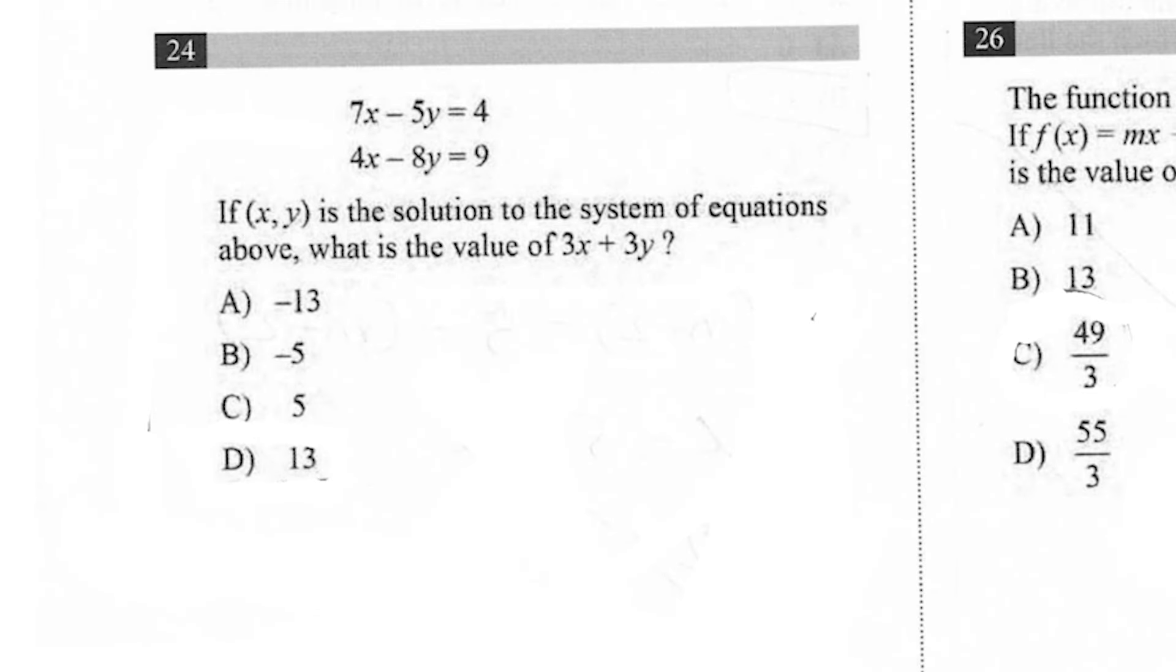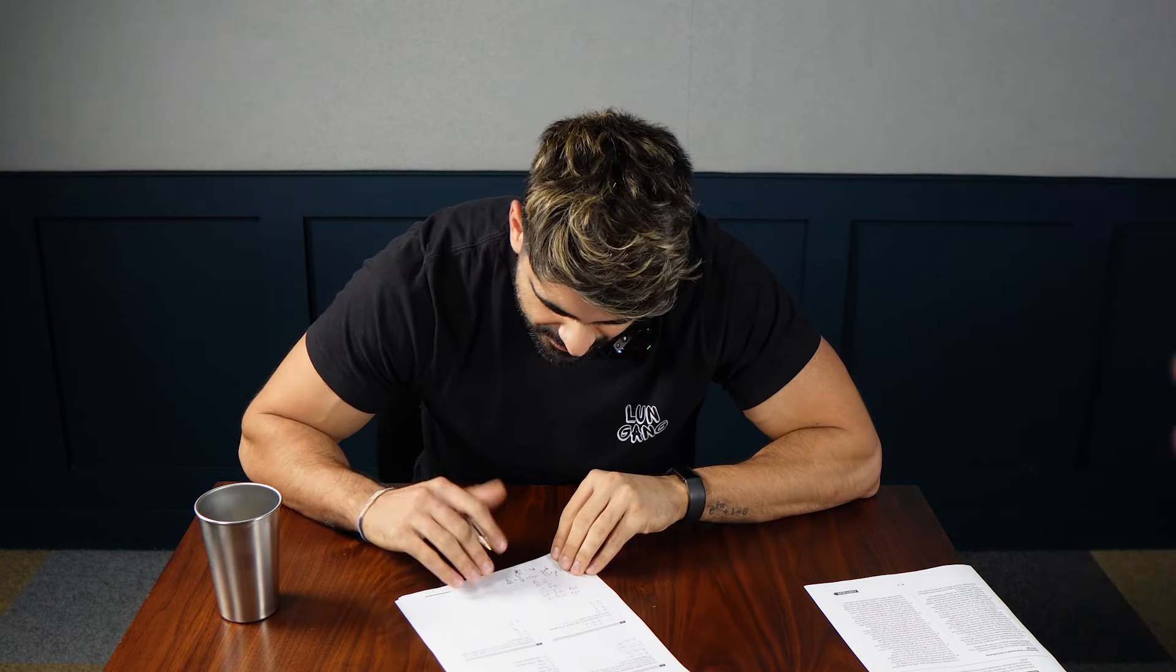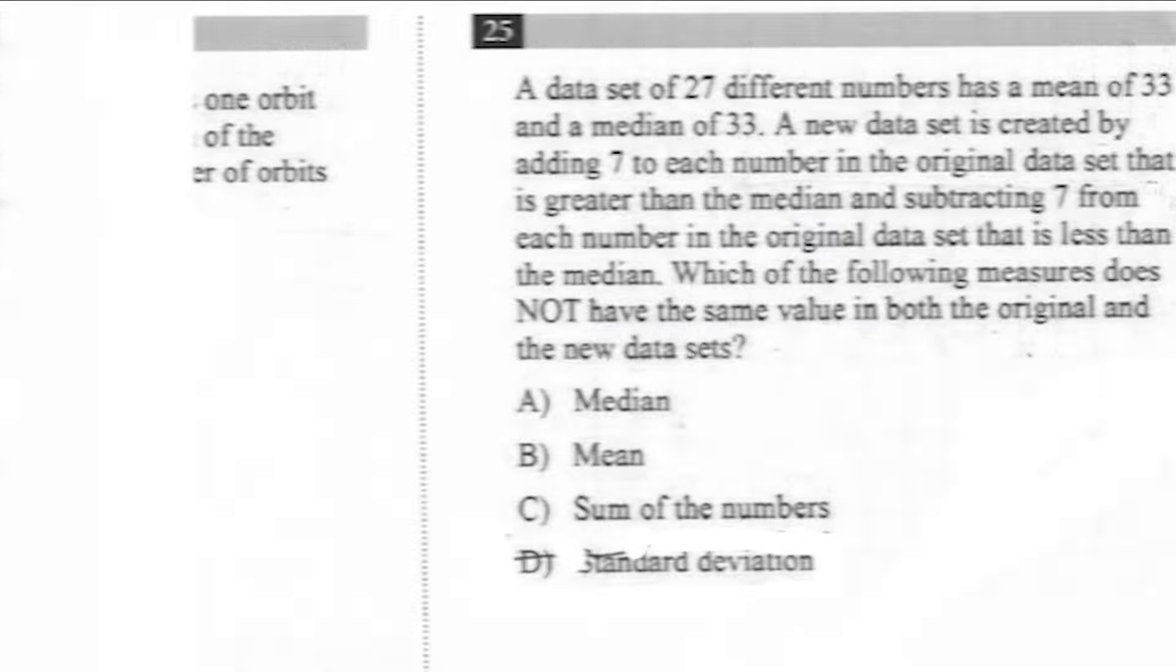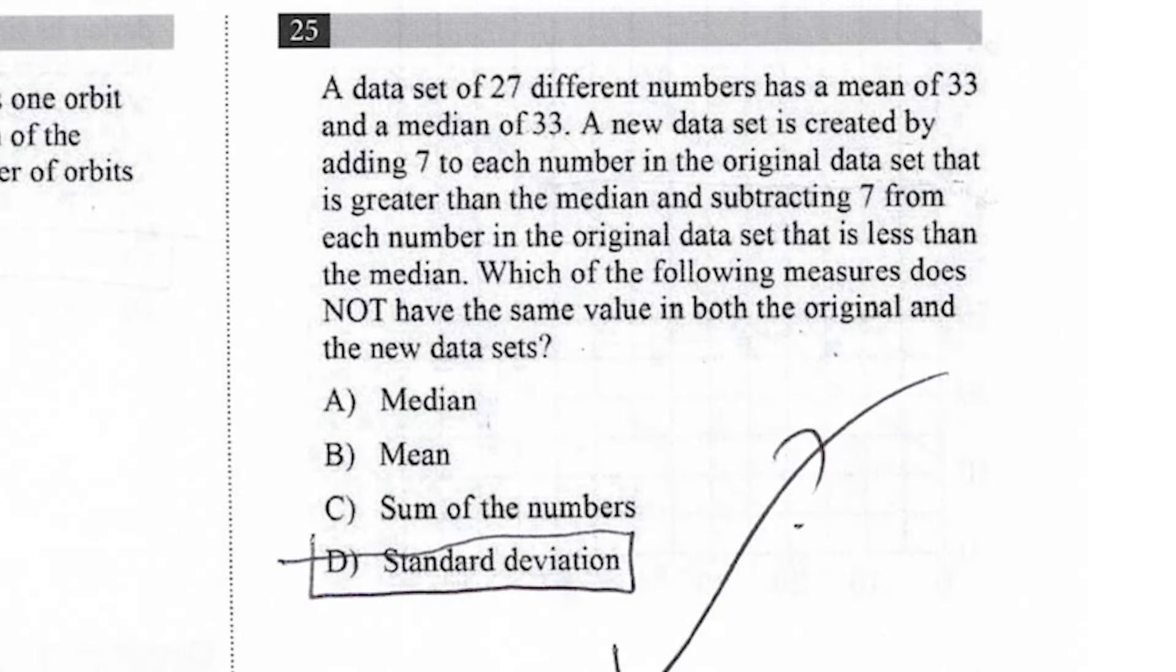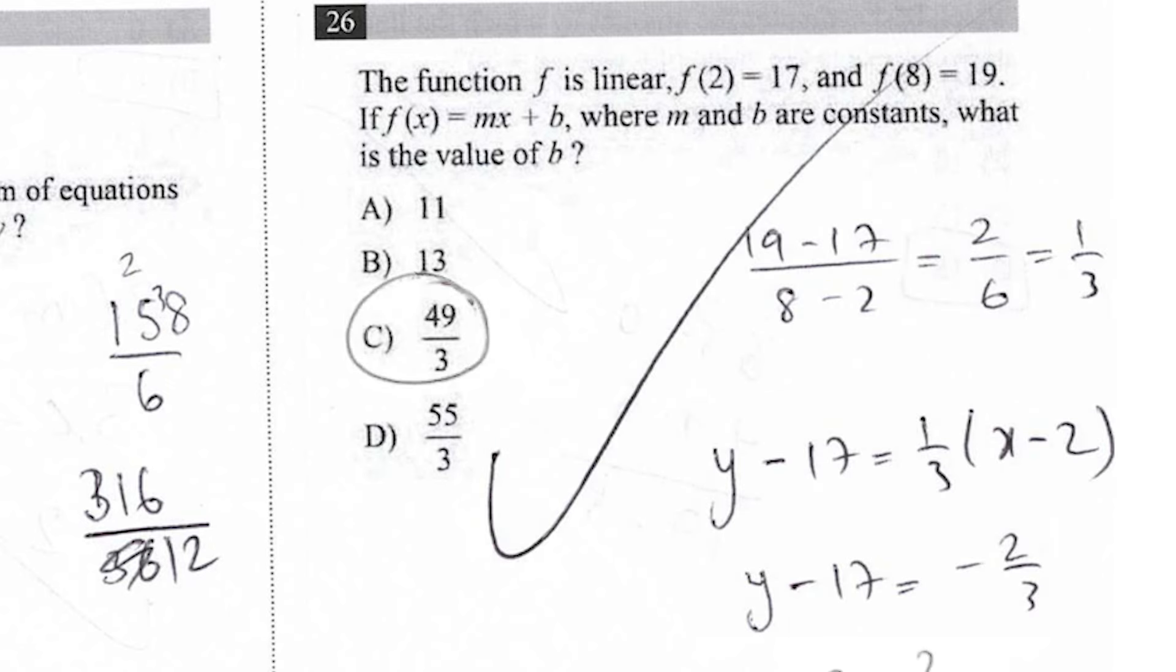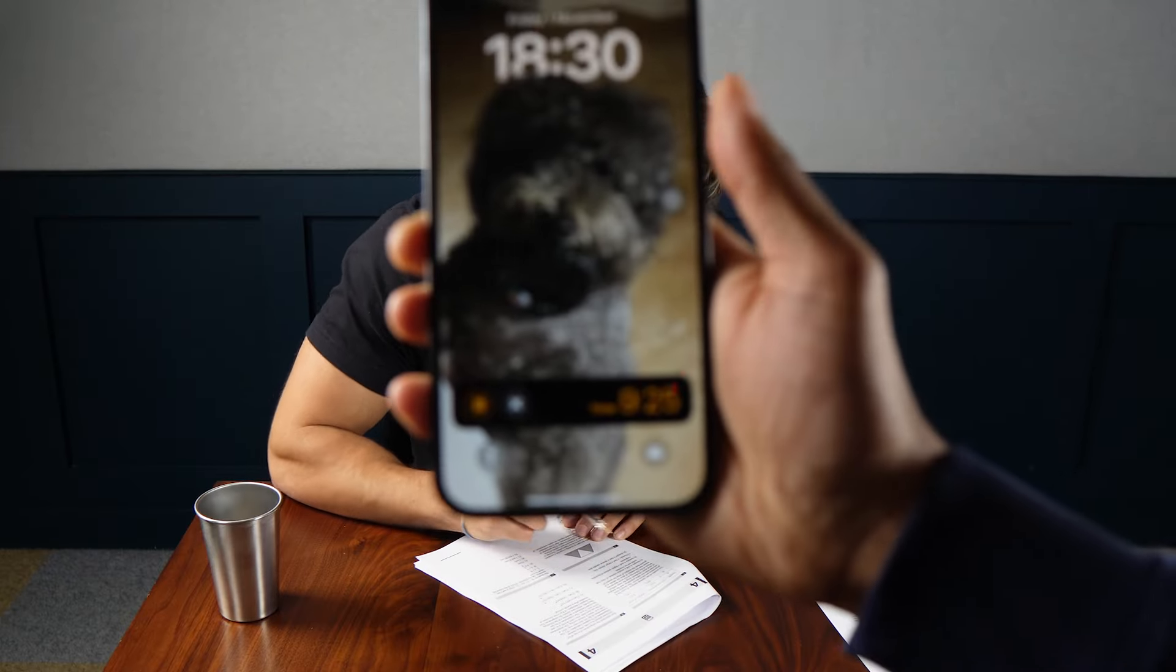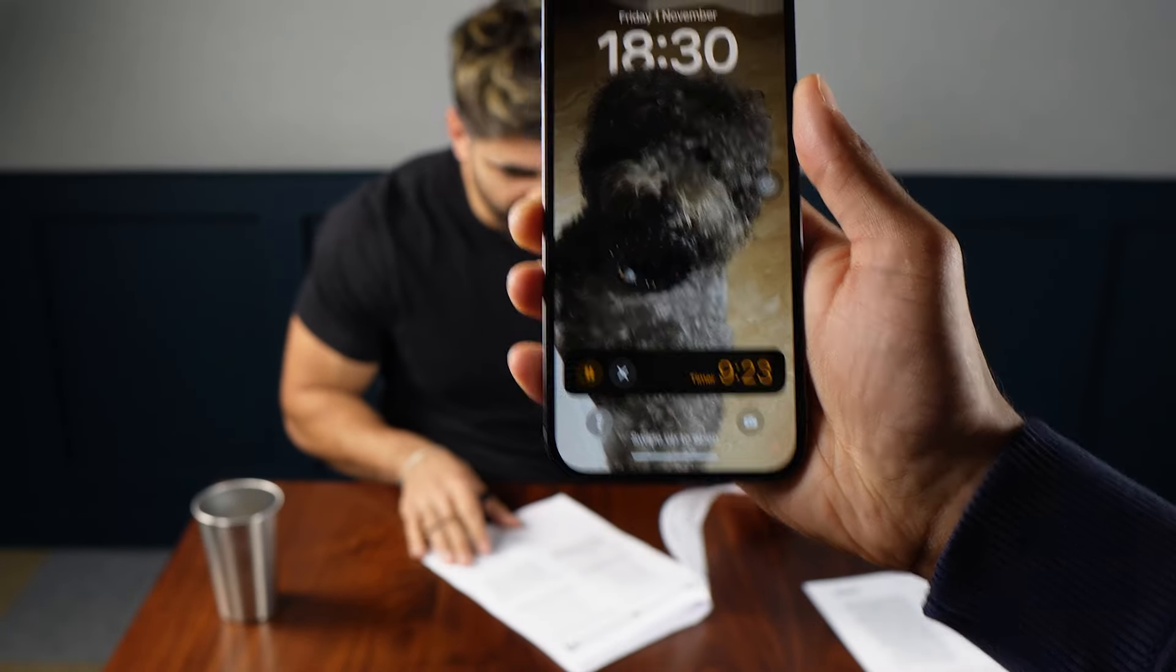If xy is the solution to the system of equations above, what is the value of 3x plus 3y? Without a calculator, that one's quite difficult. It's like 15 minutes left. I need a calculator, man. Oh, that's so annoying. Which of the following measures does not have the same value? What's 17 times 3? 30, 21, 51, minus 2, 49 over 3. Result of two random samples of votes for a proposition are shown above. How much do I have? That's 10 minutes left. There's a lot of probability here. I wasn't expecting this. I'm going to save that for later.